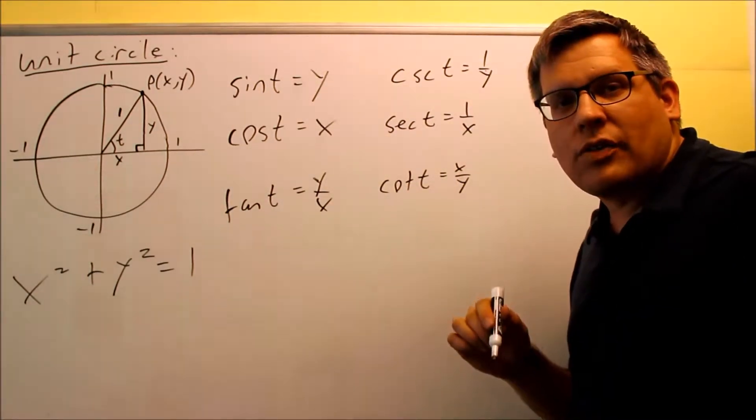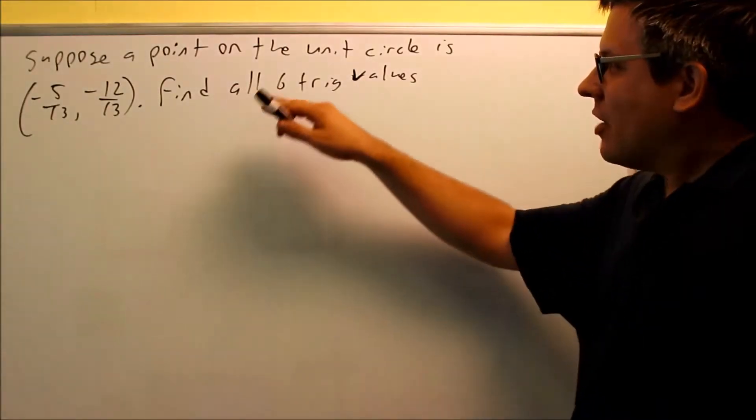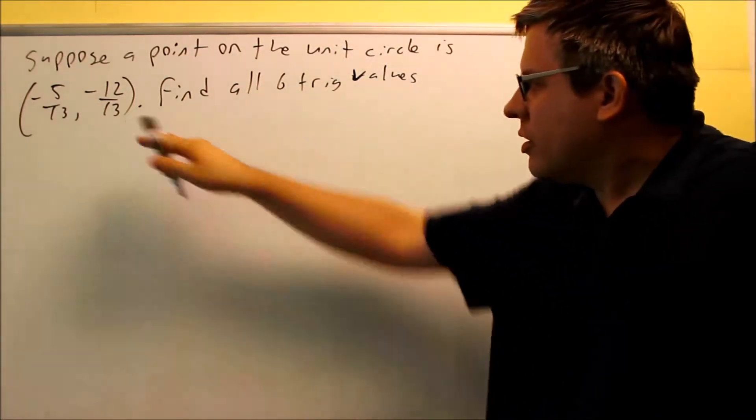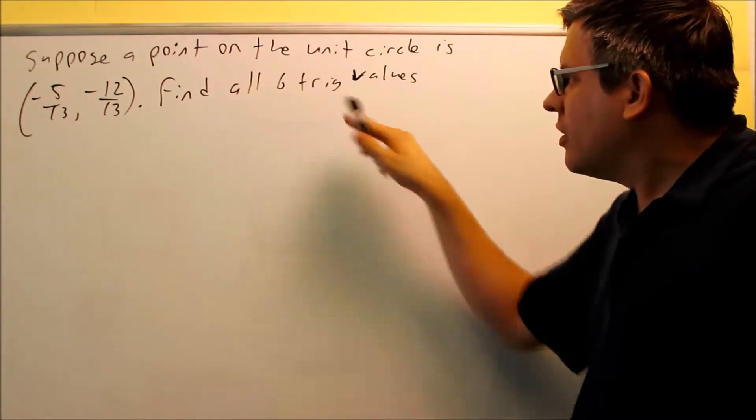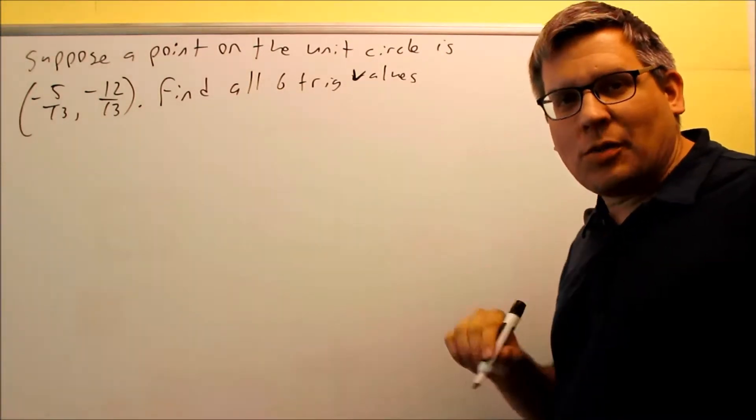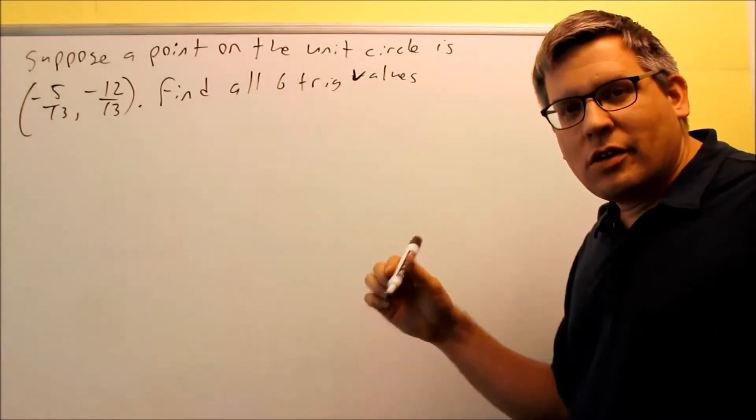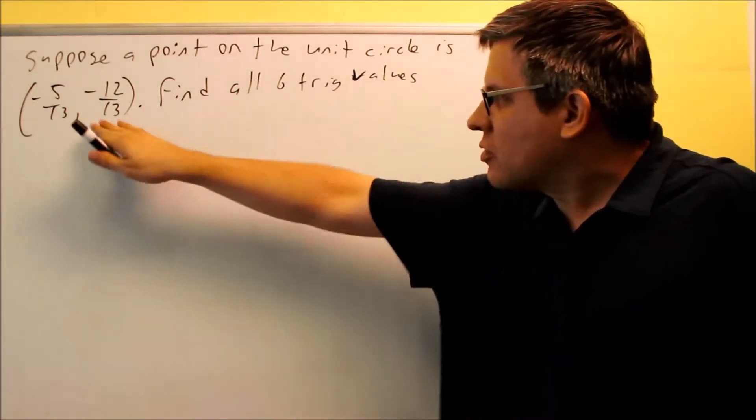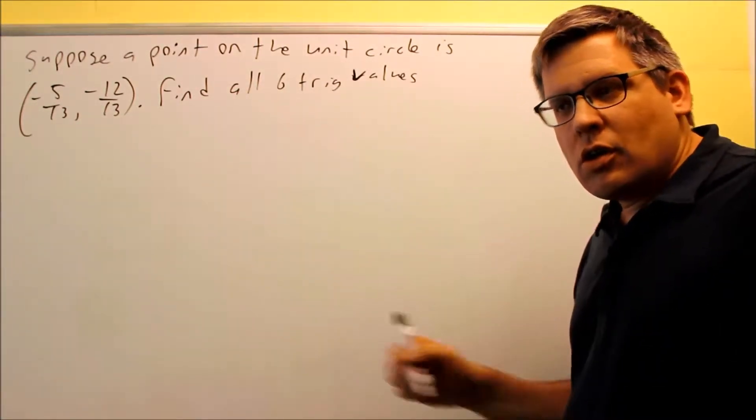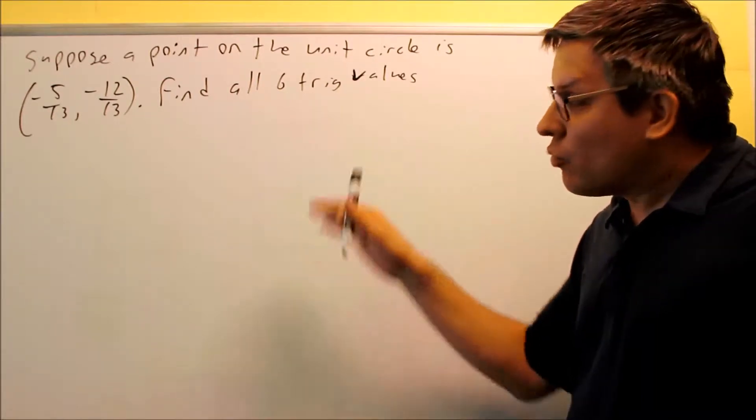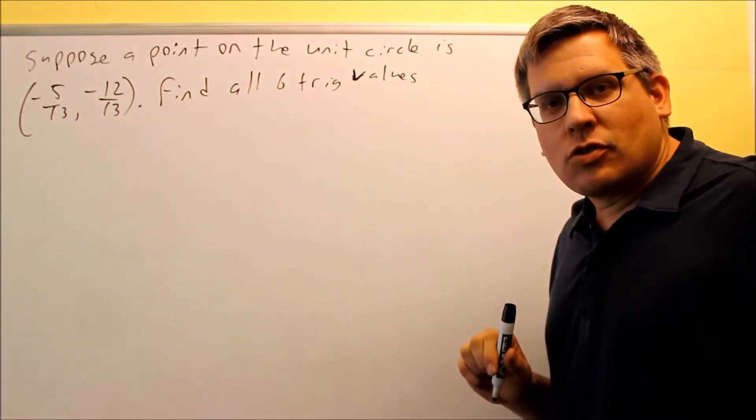So now that we've talked about the definitions, now we're going to take a look at a couple of examples. They're telling us that a point in the unit circle is (-5/13, -12/13). We want to find all six trig values. We just talked about and had on the board all the different definitions for sine, cosine, and so forth. We want to use this point in order to find those. We need to know those formulas in order to answer this question.